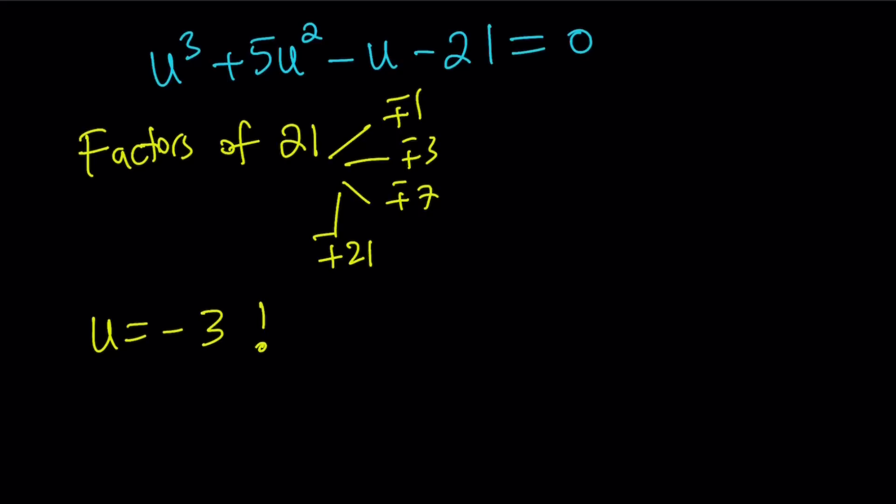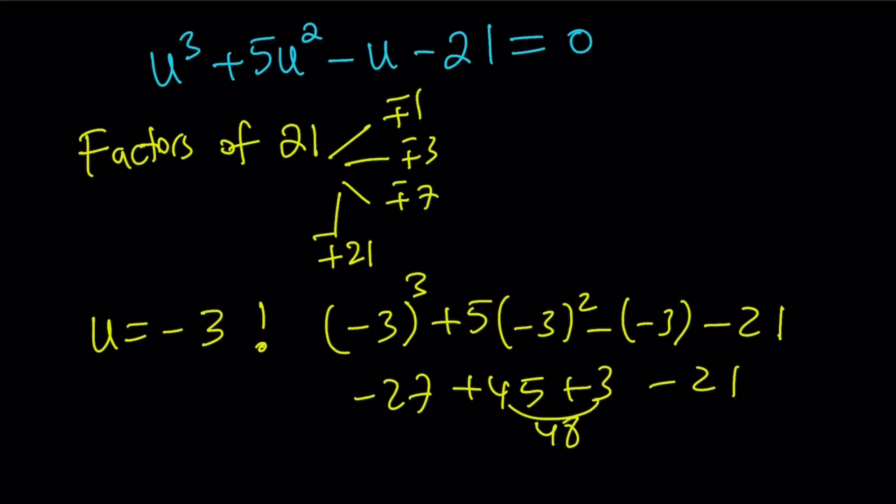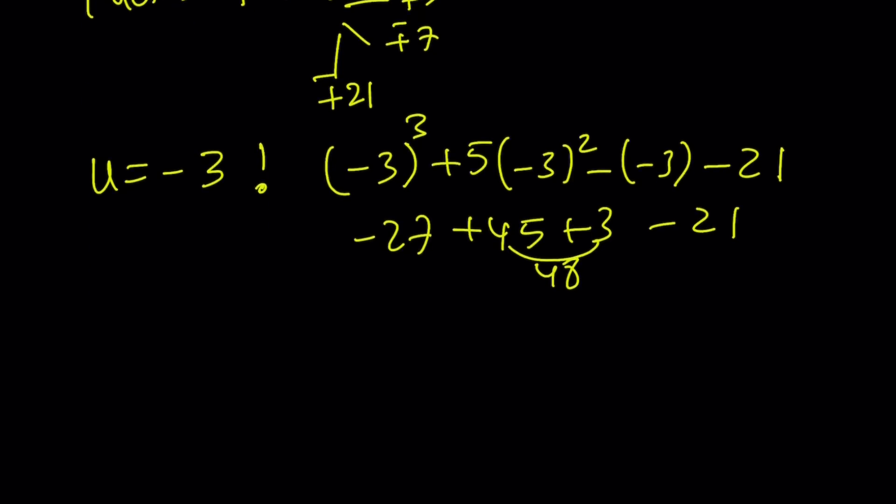So what is that supposed to mean? It means u = -3 is a solution. But let's go ahead and plug it in to make sure, because sometimes people may not believe, like how do you know it works, right? Let's go ahead and check it out. (-3)³ is -27. (-3)² is 9. 5 times 9 is 45. That's a plus 3. That's a minus 21. This is 48. 48 - 48 = 0. Hopefully you're convinced that u = -3 works.